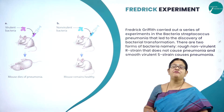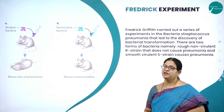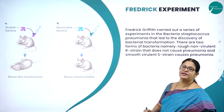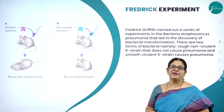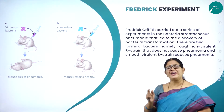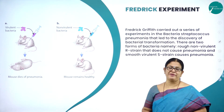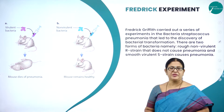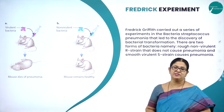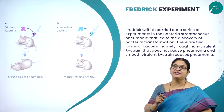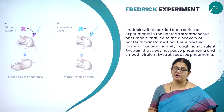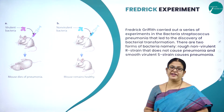In today's session, you will be studying about a very important experiment done by Frederick Griffith, called the Griffith experiment. This experiment was done because in most organisms, DNA is the genetic material responsible for hereditary characters.